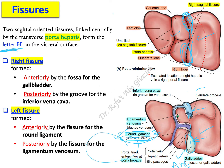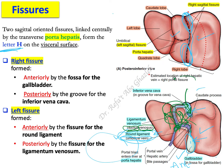What about the ligamentum venosum? The ligamentum venosum is also a fibrous remnant — of the ductus venosus. It functioned as an internal shunt in the liver that shifted blood from the umbilical vein directly to the inferior vena cava, bypassing the liver. From the inferior vena cava, blood went to the heart and then to the whole body of the fetus, because the fetal liver was not yet functioning.